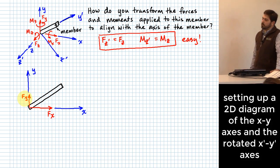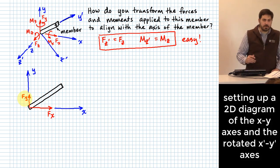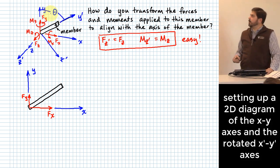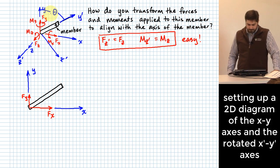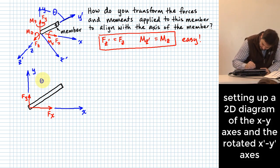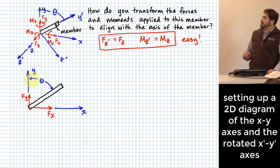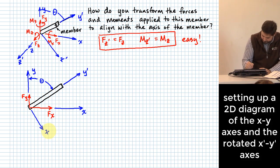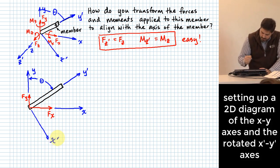When thinking about a rotation, we have to define the angle of that rotation. I'll call that theta, and I'm going to define it as the rotation from the original Y axis to the Y-prime axis — equivalently, from the original X axis to the X-prime axis. I can also show the X-prime and Y-prime axes on the diagram.